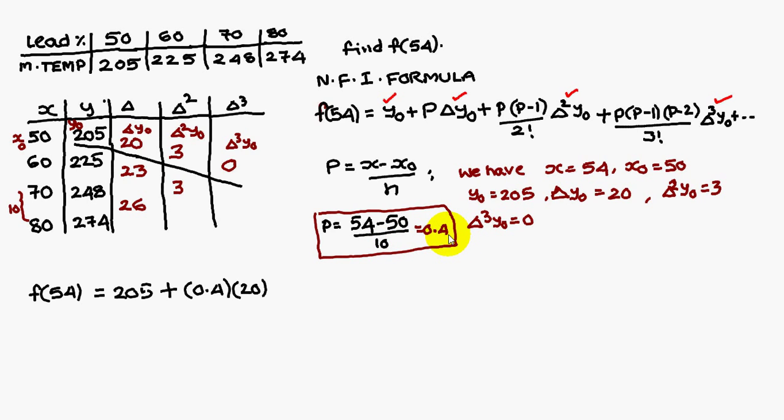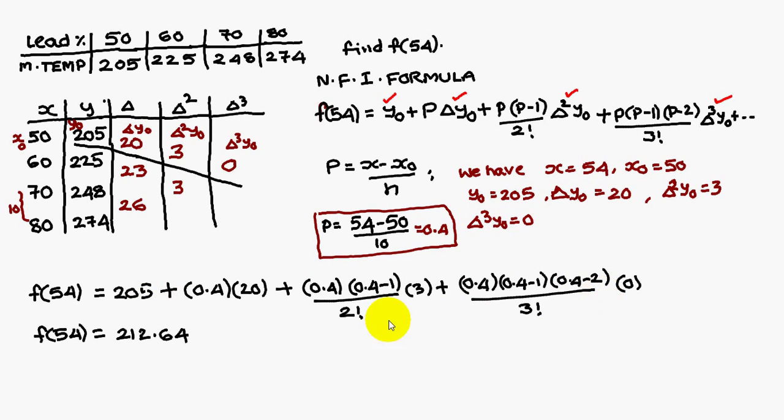Now you substitute all the values, you know y₀, Δy₀ and so on. Similarly p value you also know. Just substitute in this equation, you are going to get f of 54 is 212.64. F of 54 is 212.64. Thank you.